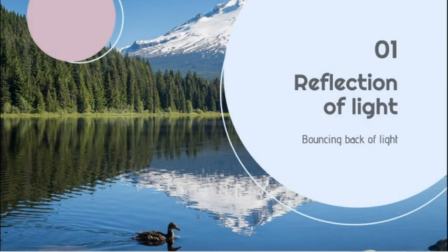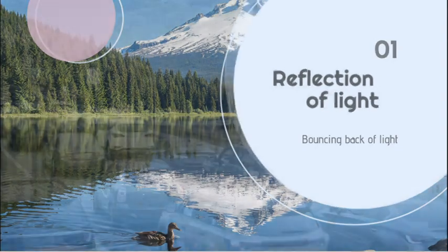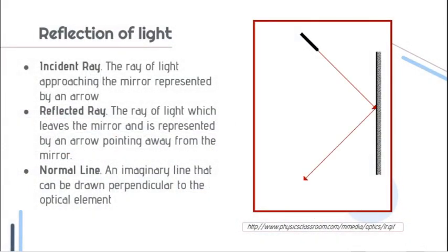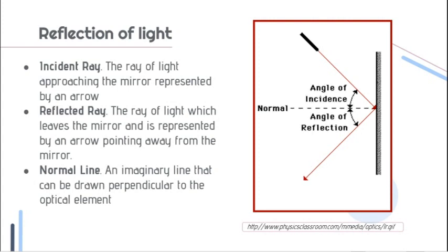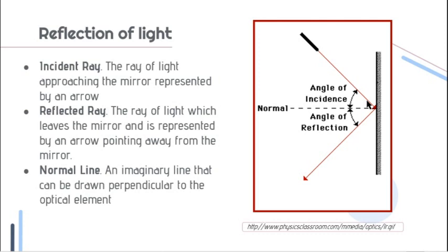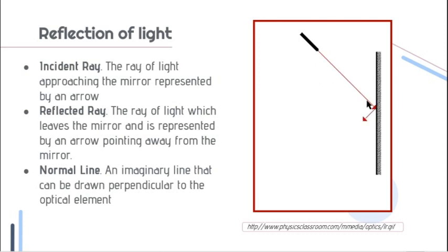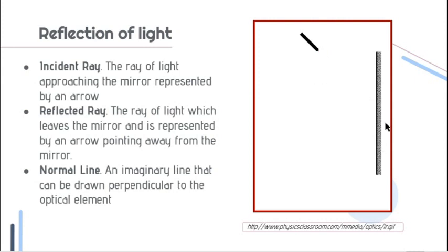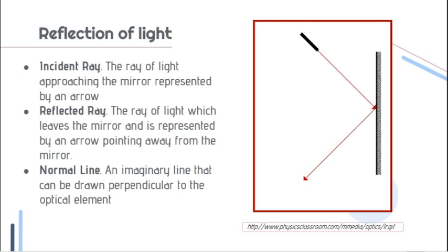Let's discuss first the reflection of light, or the bouncing back of light. The reflection of light has three important concepts: the incident ray, reflected ray, and normal line. The incident ray is the ray of light approaching the mirror, represented by an arrow. The reflected ray is a ray of light which leaves the mirror, represented by an arrow pointing away from the mirror. The normal line is an imaginary line that can be drawn perpendicular to the optical element.